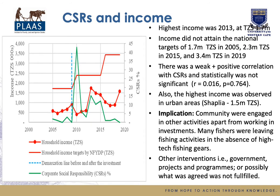On CSRs and income: highest income was observed in 2013. Income did not attain the national targets, and there was a weak and positive correlation with CSRs but statistically not significant. Highest income was observed in urban areas. This implies that communities may have been engaged in other activities apart from working in investments, or many fishers were leaving fishing activities due to the absence of high-tech equipment needed for offshore fishing.